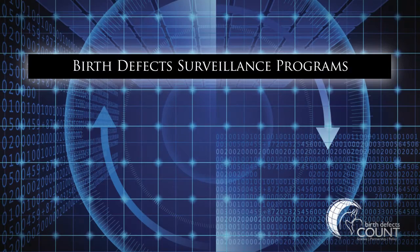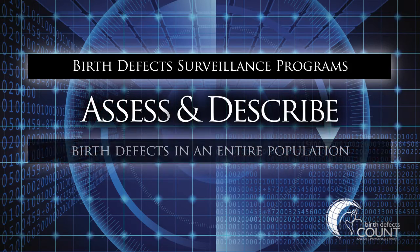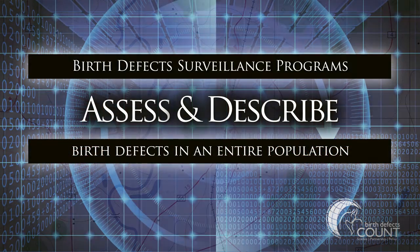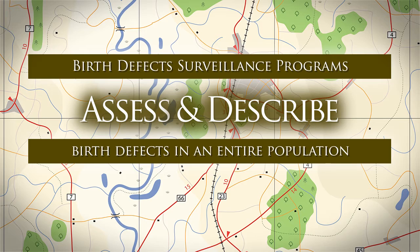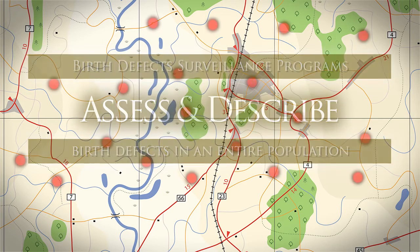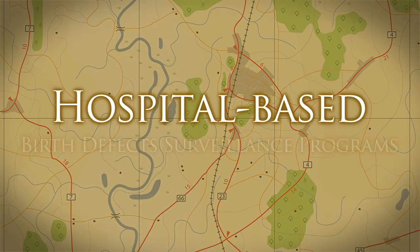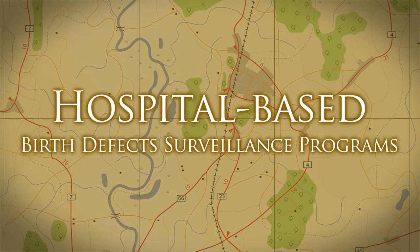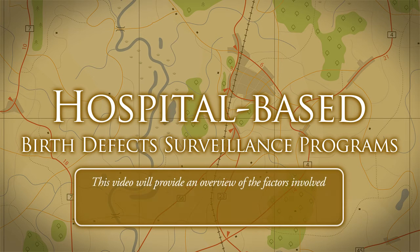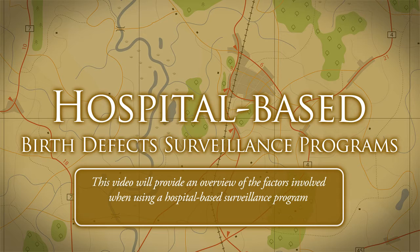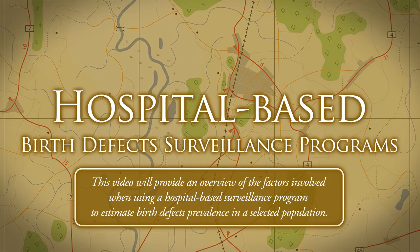Birth defect surveillance programs ideally assess and describe birth defects occurring in an entire population. However, some surveillance programs can only collect birth defects data from selected hospitals. These are known as hospital-based birth defect surveillance programs. This video will provide an overview of the factors involved when using a hospital-based surveillance program to estimate birth defects prevalence in a selected population.